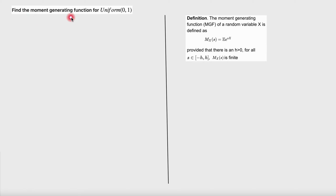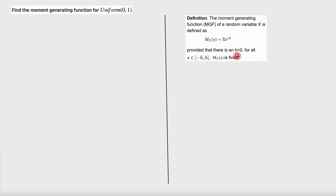Find the moment generating function for uniform distribution. First, let's go over the definition of a moment generating function. The moment generating function of a random variable X is defined as shown, provided that there is an h greater than zero for all s in this interval.